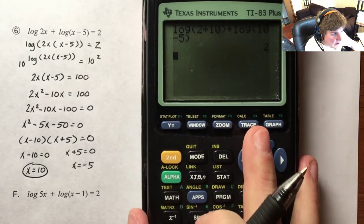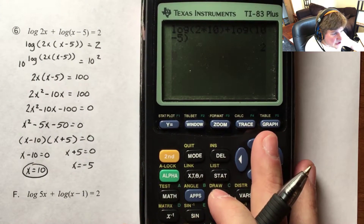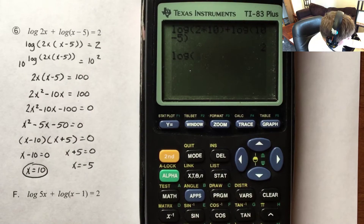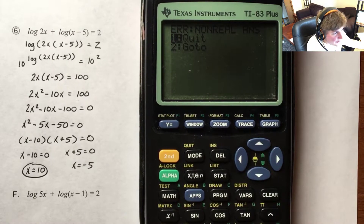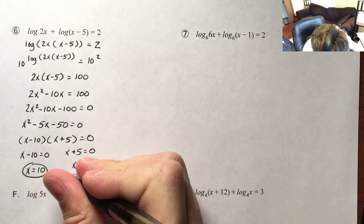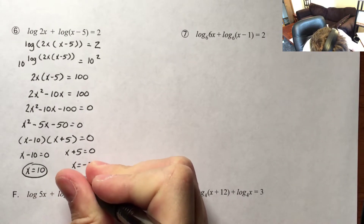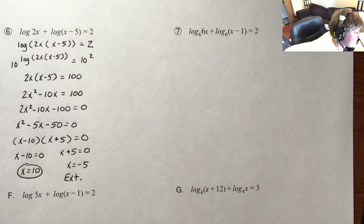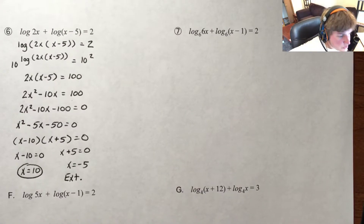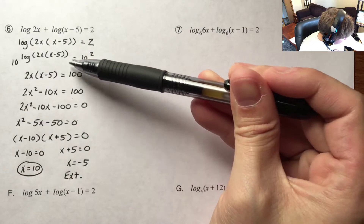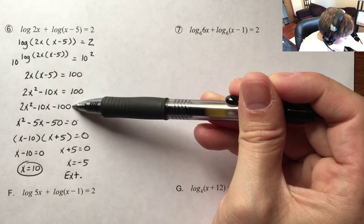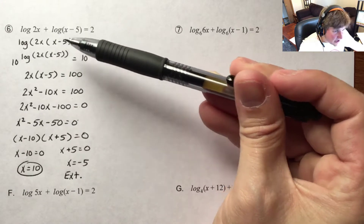Now I need to go back through and check negative 5. So: log base 10 of 2 times negative 5, plus log base 10 of negative 5 minus 5. And — non-real answer. That's a pretty prime indicator that negative 5 is an extraneous solution. It's a solution to the equation from that point down, but it's just not a solution to the original logarithmic equation up here.